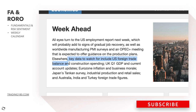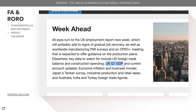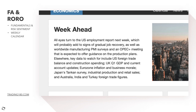Key data to watch includes US foreign trade balance and construction spending, UK first quarter GDP and current account updates. The UK Q1 GDP is essentially the final estimate — we already know what the data was, so it's not really going to be a market-moving event. Eurozone inflation and business morale, Japan's Tankan survey, industrial production and retail sales, and Australia's foreign trade figures round out the week's events.